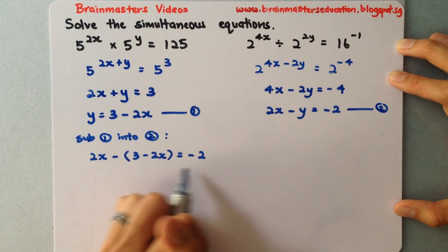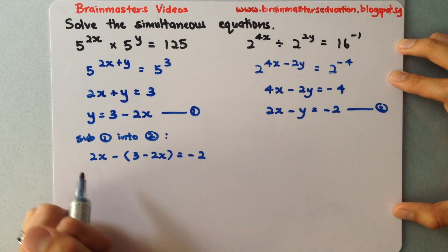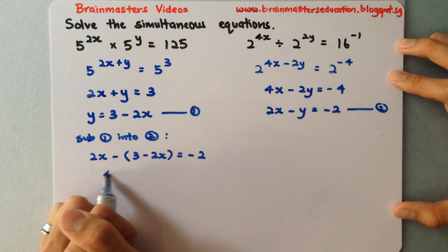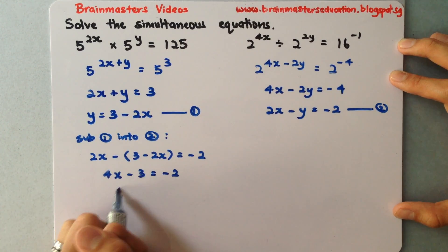So you'll notice that everything is x and numbers. So you need to solve for your x. So when I do the expansion and everything simplifying it, I have 4x minus 3 equals negative 2. Bring this over. So 4x equals 1. x equals 1 over 4.